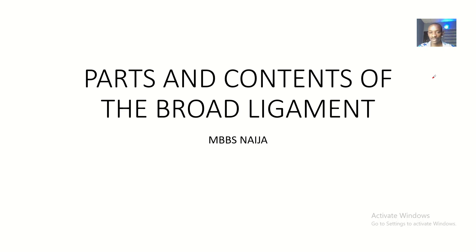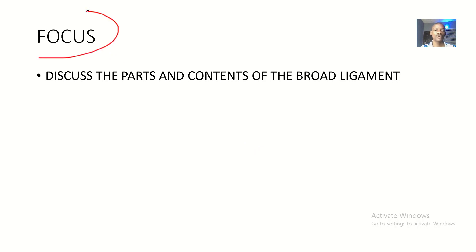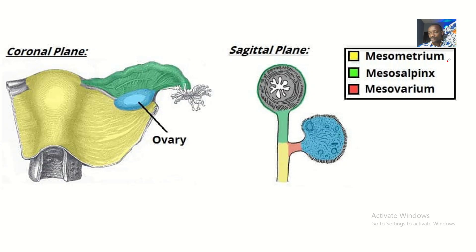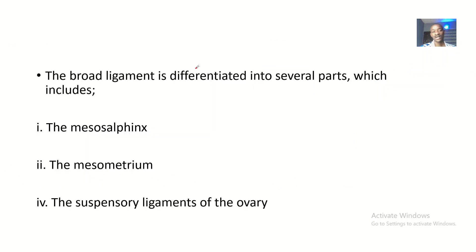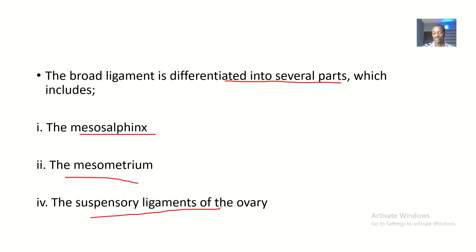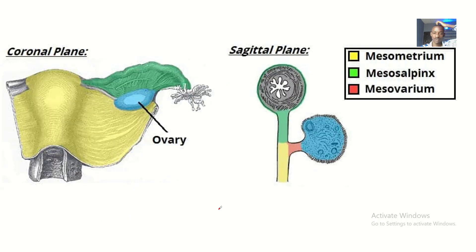Normal contents of the broad ligaments — that's our focus today, along with the parts of the broad ligaments. The broad ligament is differentiated into several parts, which include the mesosalpinx, the mesometrium, and the suspensory ligament of the ovary.